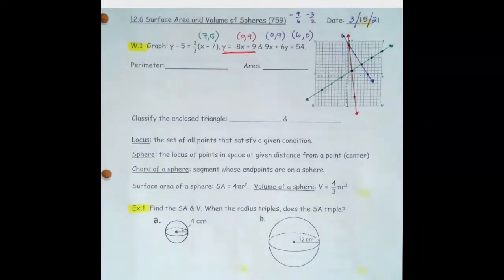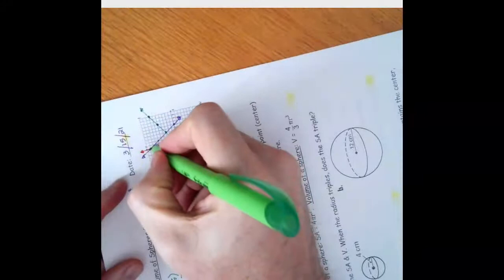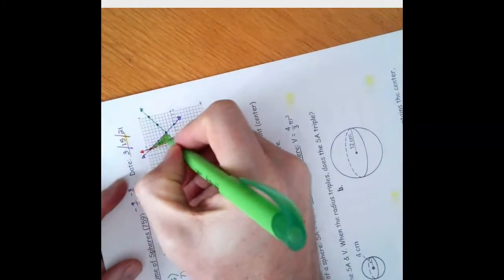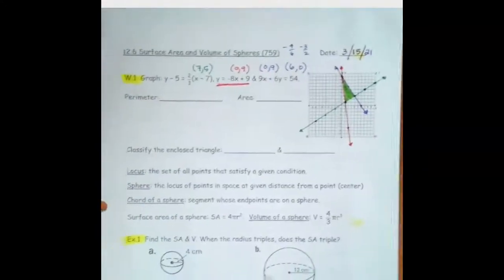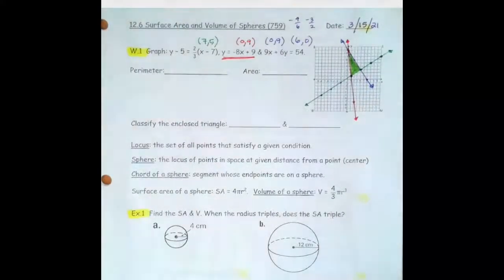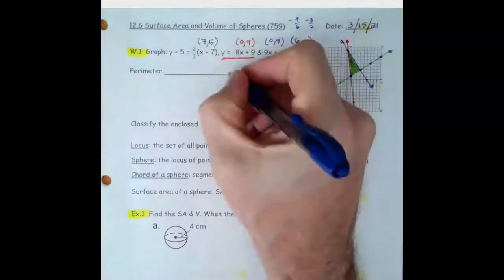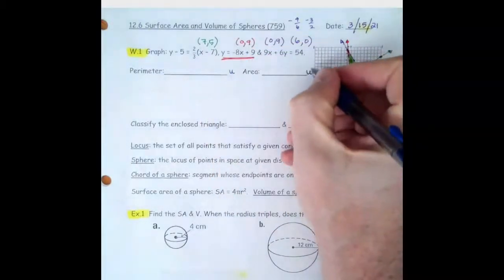And if we look at that triangle there, that's going to be that green triangle right there. So for perimeter, we like to get the units on that, and for area it's units squared.